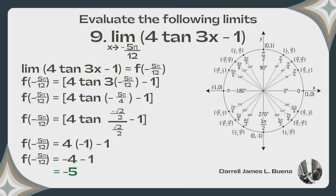Problem 9: the limit of 4 times tangent of 3x, minus 1 as x approaches negative 5π/12. Substituting negative 5π/12 for x, then multiplying 3 by negative 5π/12 gives negative 5π/4. Finding the tangent of negative 5π/4 on the unit circle gives negative √2/2 over √2/2, which equals negative 1. Multiplying 4 by negative 1 gives negative 4. Subtracting 1 gives the final answer of negative 5.